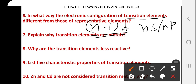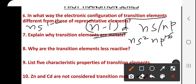The next basic difference is with reference to the general electronic configuration. The general electronic configuration of representative elements is ns¹⁻² for S-block, or ns² np¹⁻⁶ for P-block series. Whereas the d-block electronic configuration is (n−1)d¹⁻¹⁰ ns⁰⁻², as we have seen. These are the two basic differences.